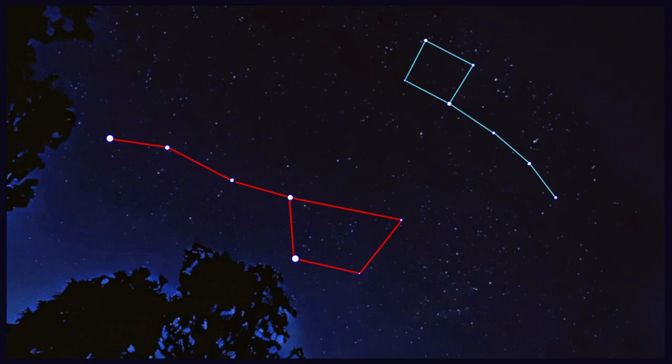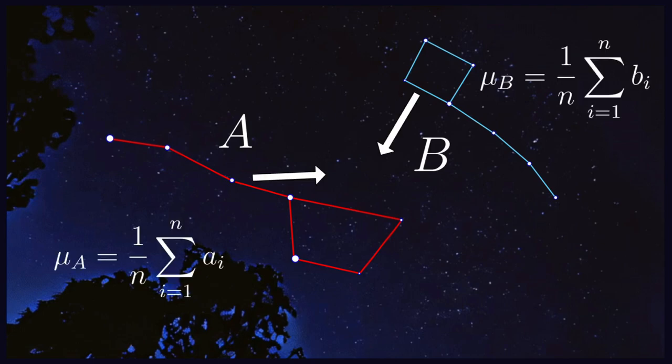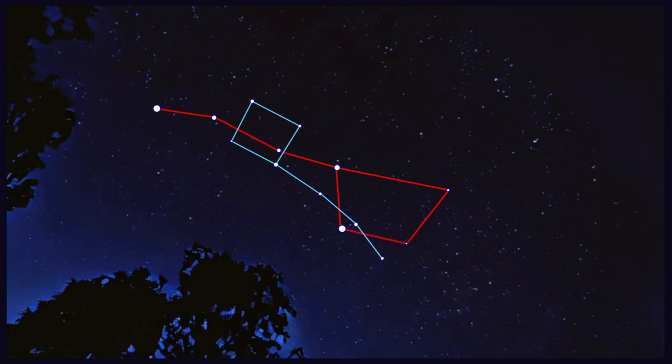The first thing it does is to find the centroids of the points, which in our case is just the mean of the Big Dipper points represented by the matrix A, and the Little Dipper points represented by the matrix B. Then, we extract the centroid of each dipper from its corresponding points matrix, moving them to the center of our coordinate system.